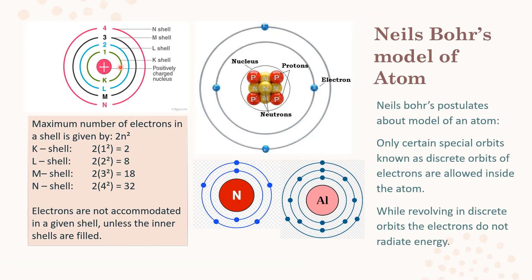Niels Bohr called these energy levels shells and named them K, L, M, N with orbit numbers 1, 2, 3, 4. The K shell, closest to the nucleus, has orbit number 1. The maximum number of electrons each shell can hold is given by the formula 2n², where n is the orbit number. K shell holds 2 electrons (2×1²), L shell holds 8 electrons (2×2²), M shell holds 18, and N shell holds 32.